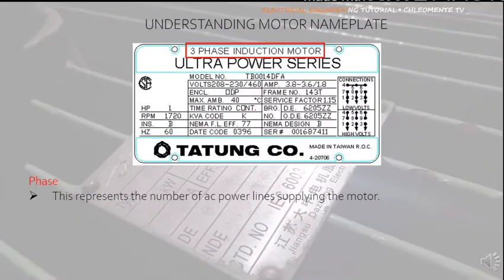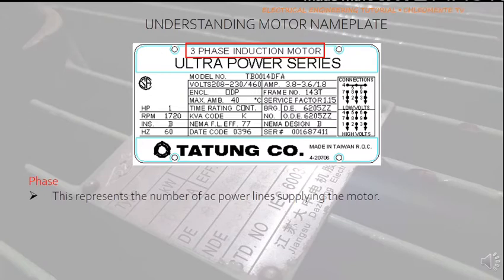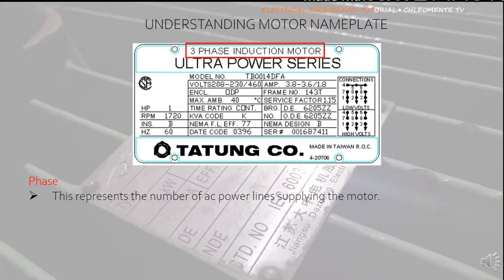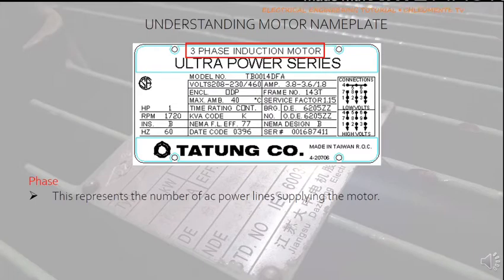Phase: The number of phases represents the number of AC power lines supplying the motor. For example, in a single-phase motor, the conductors supplying the motor are line 1 and line 2. In this example, three phase means the motor is supplied by three wires: line 1, line 2, and line 3.